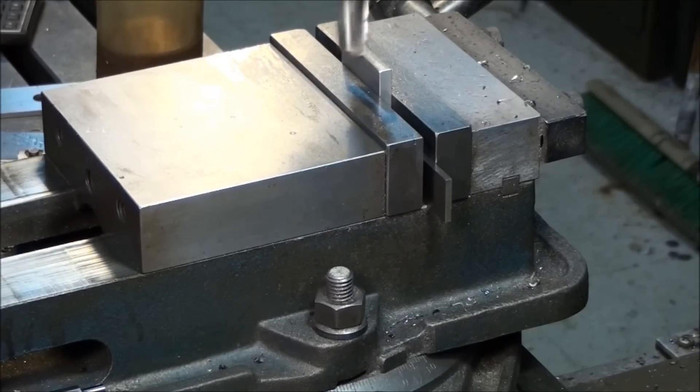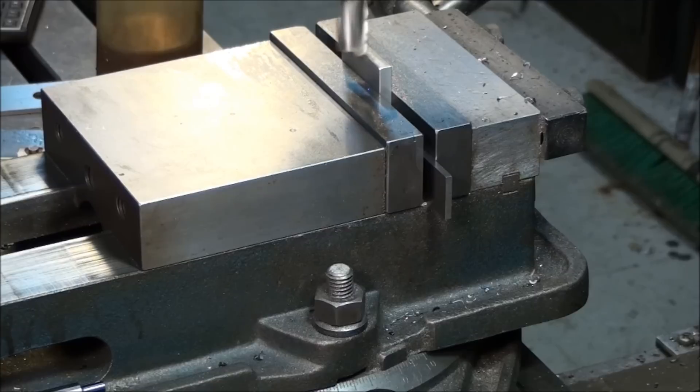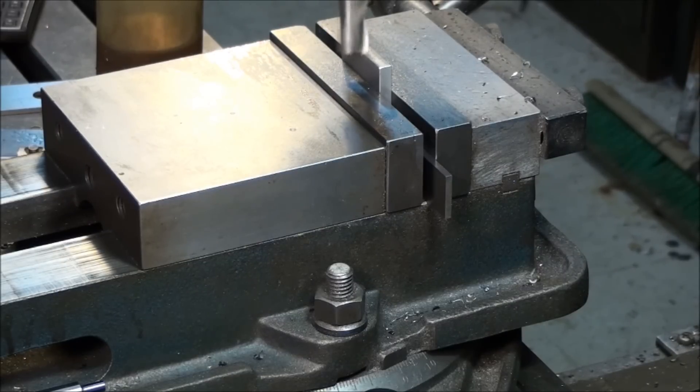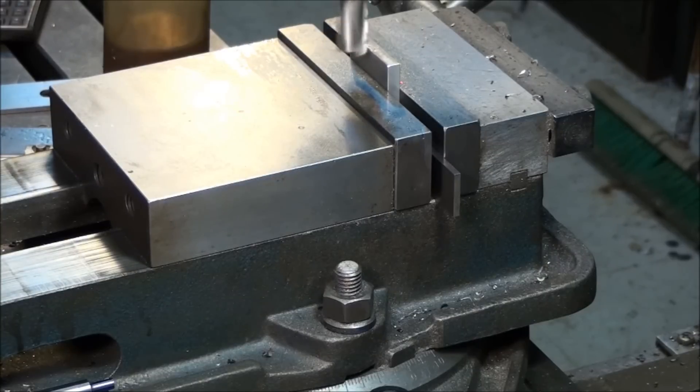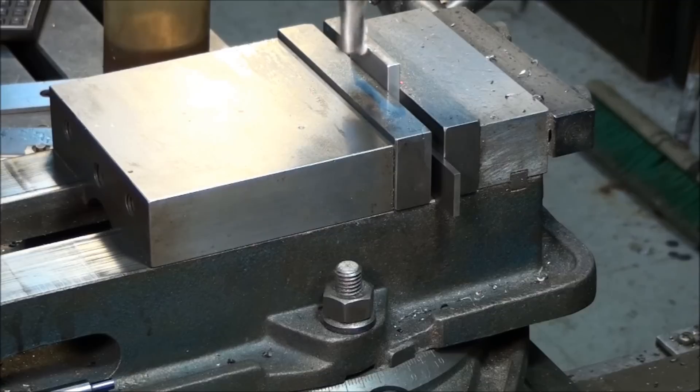Now let's just run the end mill down until it touches. You're doing this, let me touch it off here. Okay, right there. Set my dial to zero. You're doing this to a part where you don't want to leave a mark like this, you can put a piece of paper in there and touch the paper and move up the thickness of the paper. I don't care in this case if it scratches the surface because it's going to be milled out anyway.